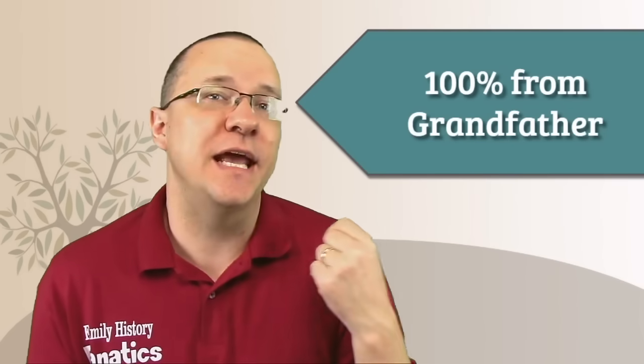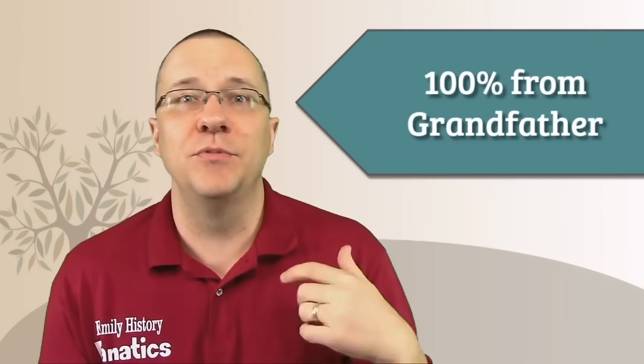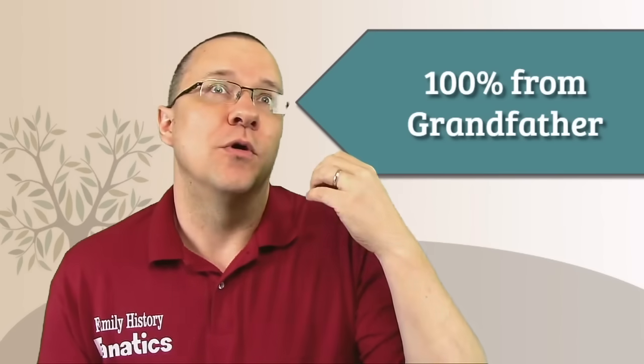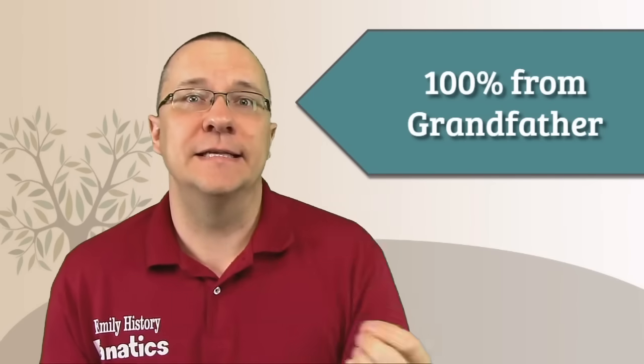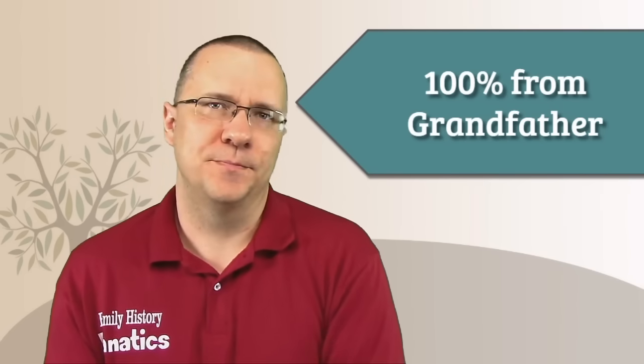The first possibility is you get a chromosome that is 100% from your grandfather. In other words, your father passes on his paternal chromosome complete to you. Let me show you what that looks like. If I go to GEDmatch and compare myself to my paternal grandfather, you can see here on chromosome number six that it is all blue along the bottom, indicating that it is a half match all the way across. In other words, my chromosome number six from my father is the exact same as the chromosome that he inherited from his grandfather. That's pretty cool.